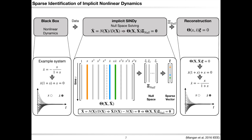To overcome this issue, Mangan et al. developed an implicit SINDy algorithm. What implicit SINDy tries to do is rewrite the rational dynamics in implicit form, transferring the problem of identifying rational dynamics into a problem of identifying implicit equations. To do so, Mangan et al. developed a new way to build the library.